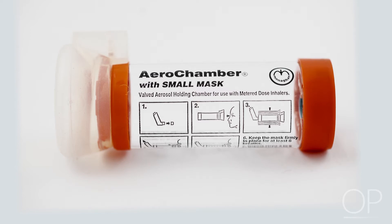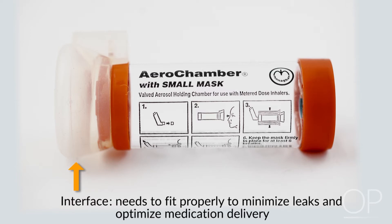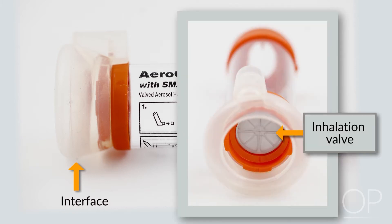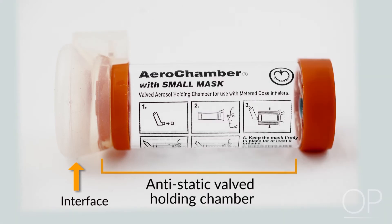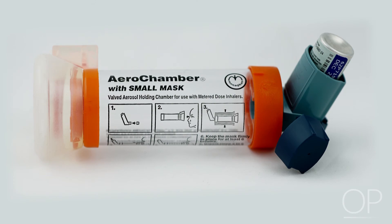Some components of the chamber itself: the interface — an appropriate sized interface is essential to minimize leaks during use and optimize delivery of our medication. The one-way inhalation valve separates the chamber from the patient and ensures that upon inhalation, the patient draws gas through the chamber that contains the medication. The one-way exhalation valve ensures that upon exhalation, gas is diverted through a separate channel out to the room and away from the medication chamber, helping to prevent dilution of the medication from exhaled gases. The antistatic chamber and the MDI adapter — the MDI adapter is where the chamber interacts with the MDI and is able to accept medication.